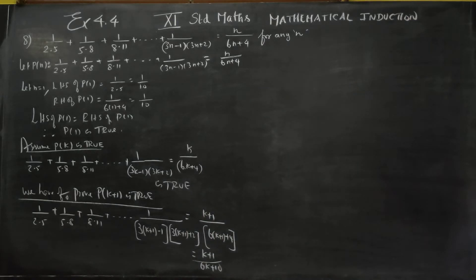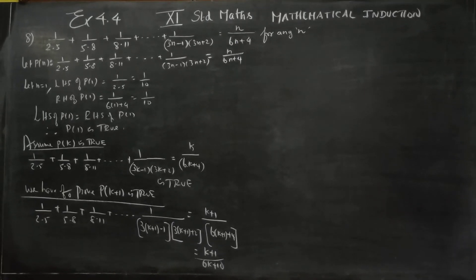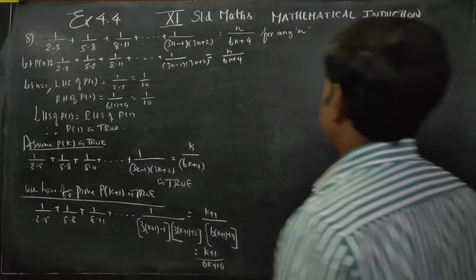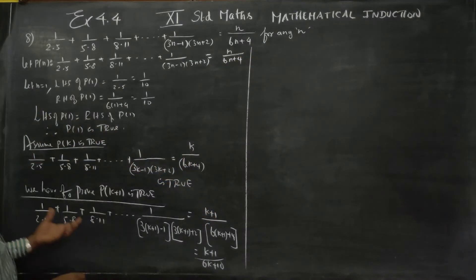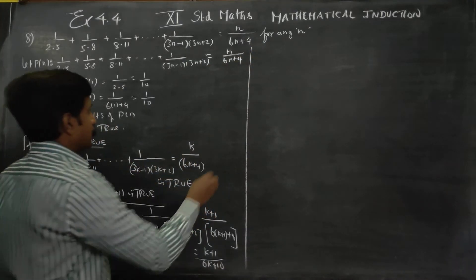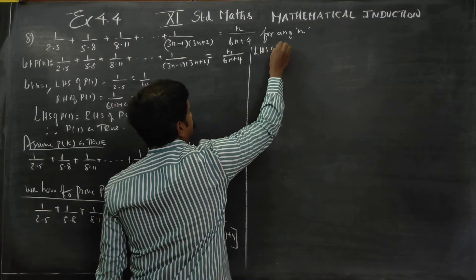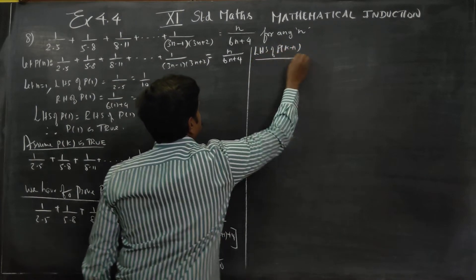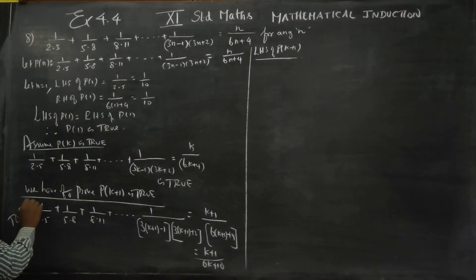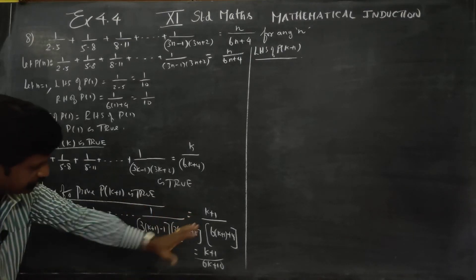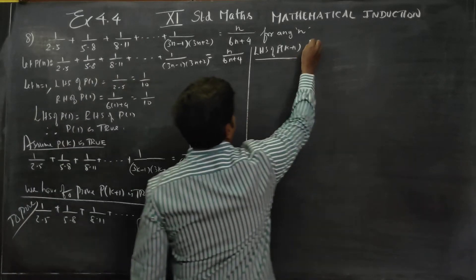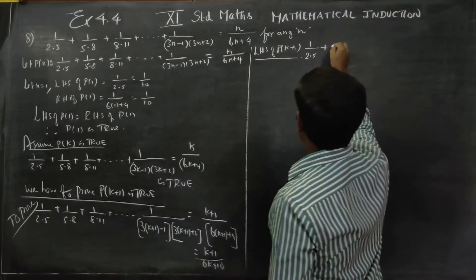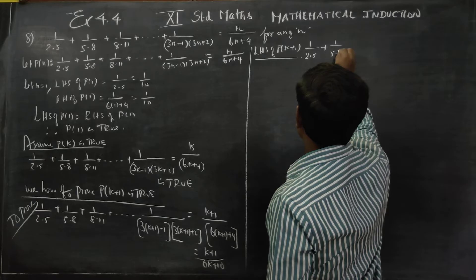We have to start with the LHS of P of k plus 1. LHS of P of k plus 1 — we have to prove this one. Starting with: 1 by 2 into 5, plus 1 by 5 into 8, dot dot dot.